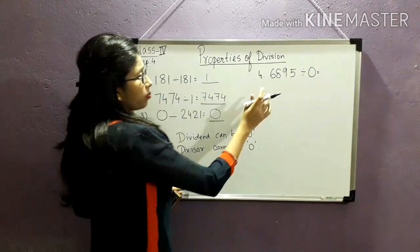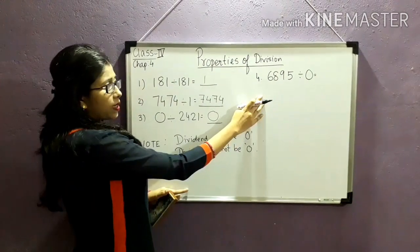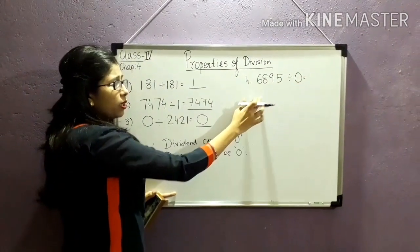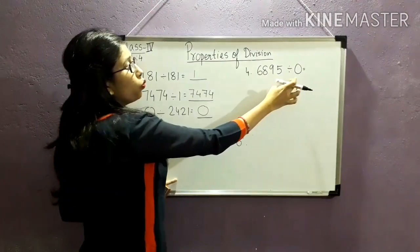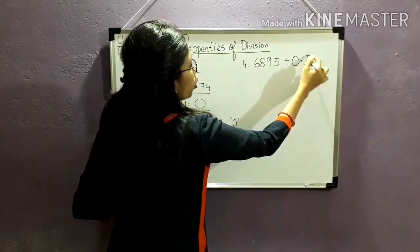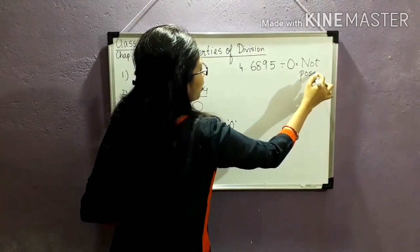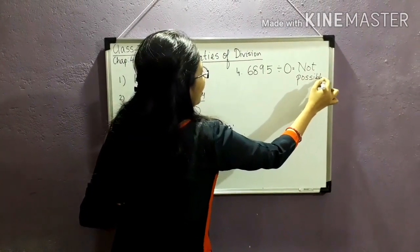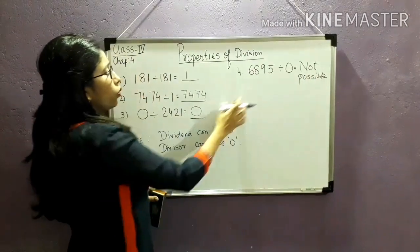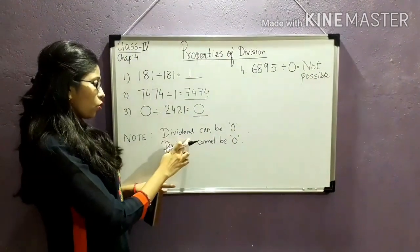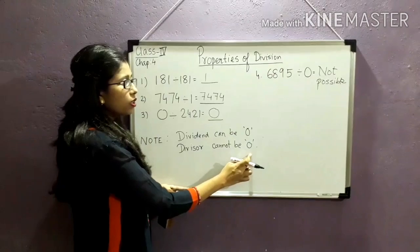Now my last property says, is it possible to divide 6895 with 0? No, not possible. Why is it not possible? Because divisor cannot be 0. Dividend can be 0 but divisor cannot be considered as 0.